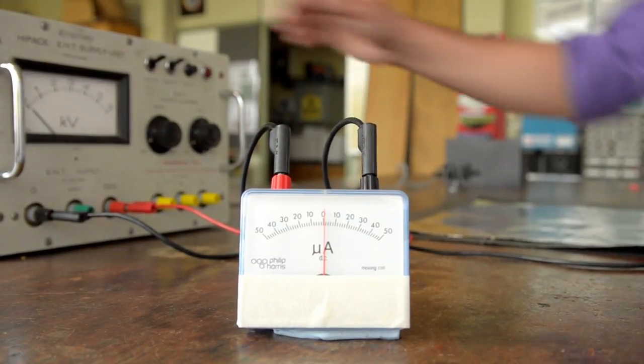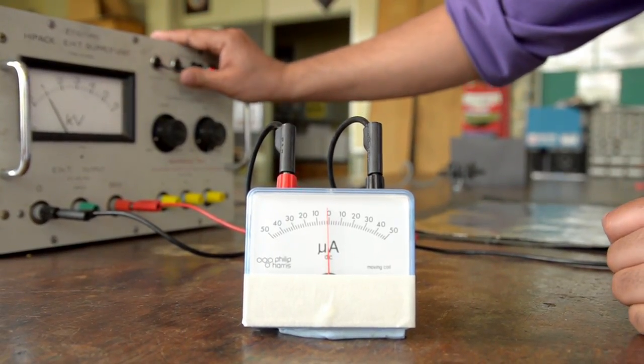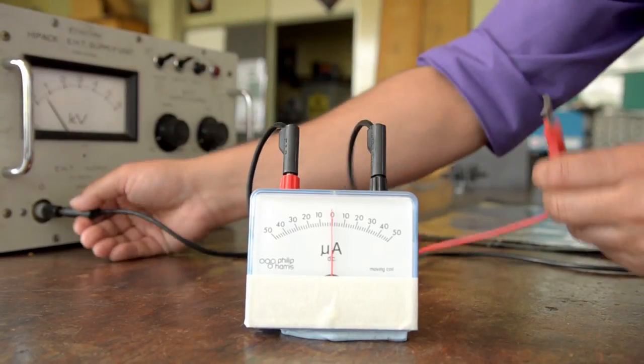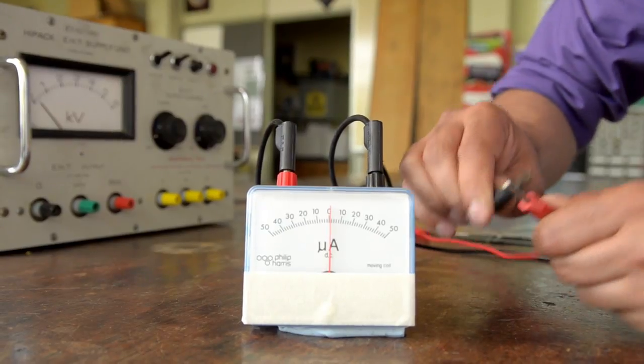So let's see what happens when I turn the power on. You can see the ammeter kicked to the left. I'm going to turn the power off now and discharge. And the ammeter kicked in the opposite direction this time. So what's going on?